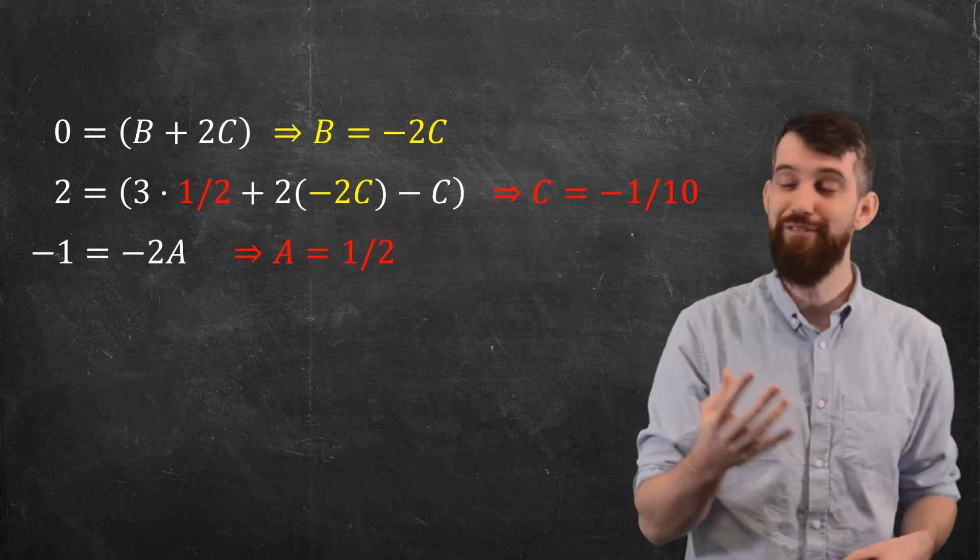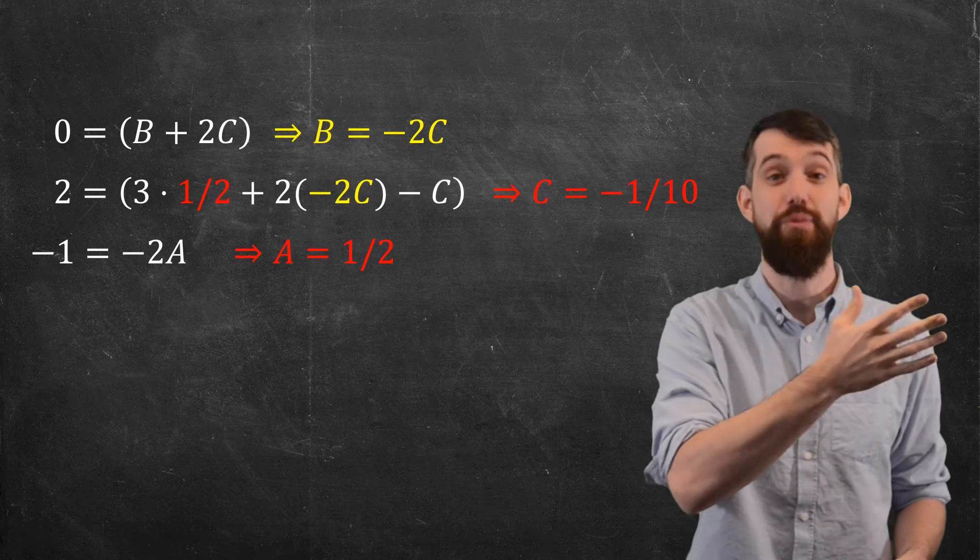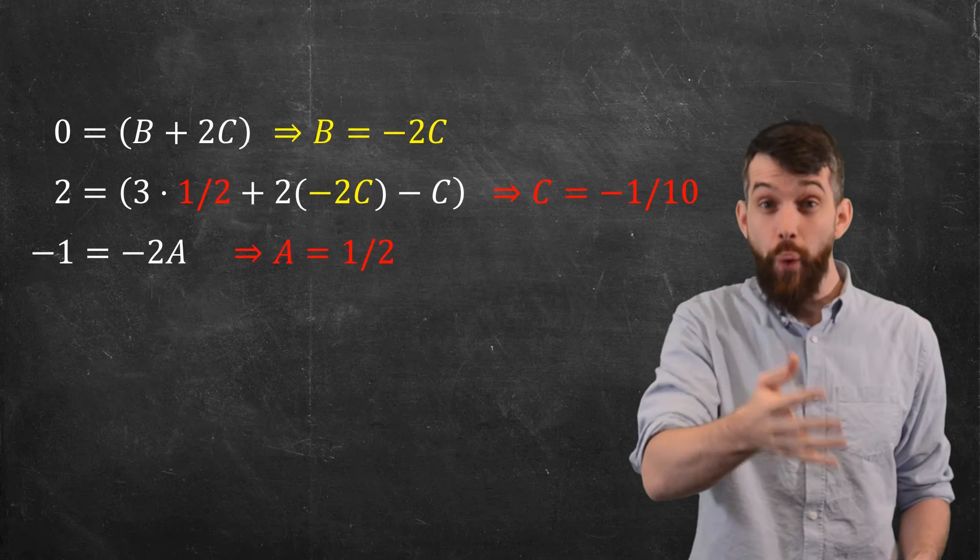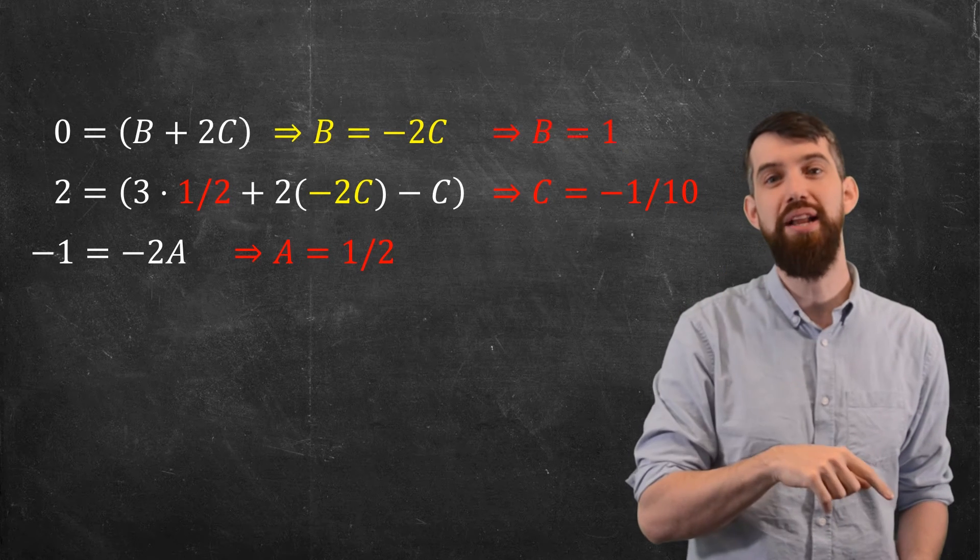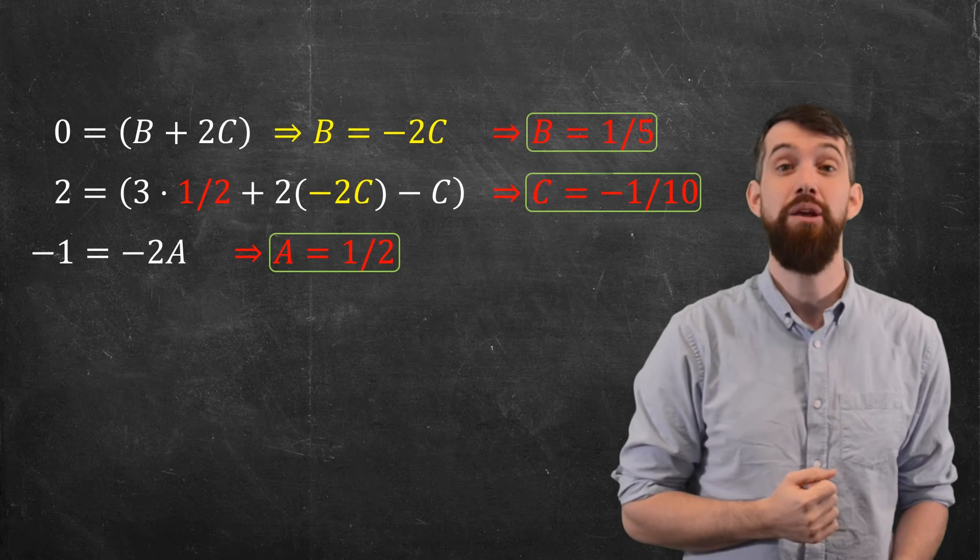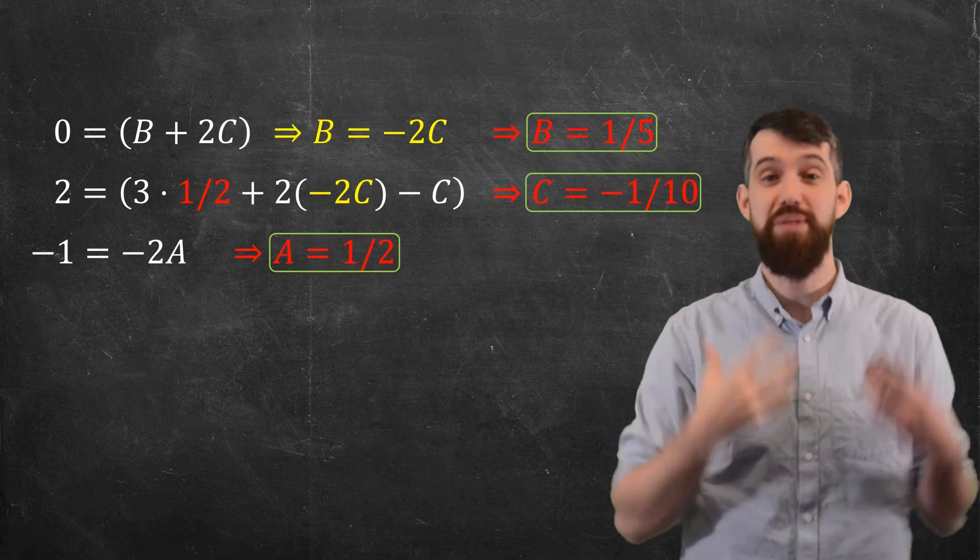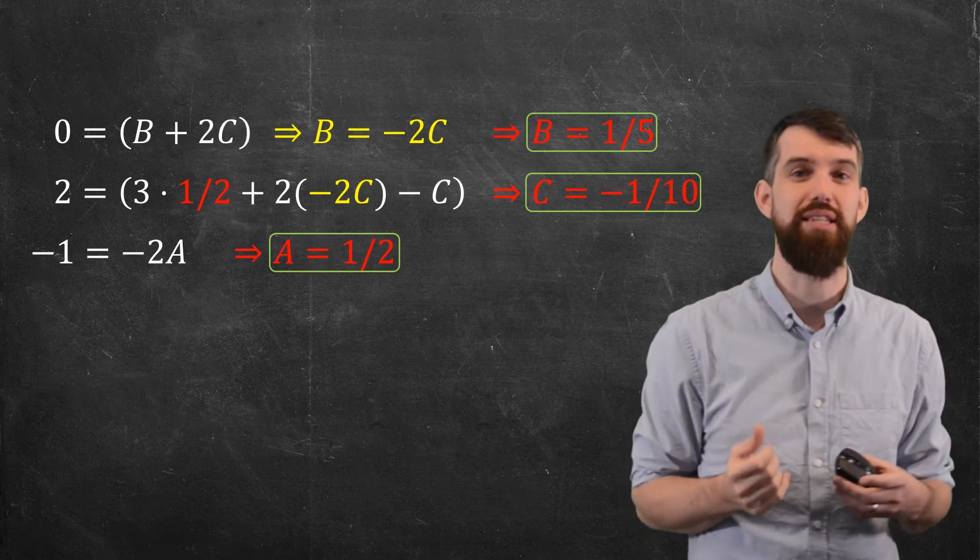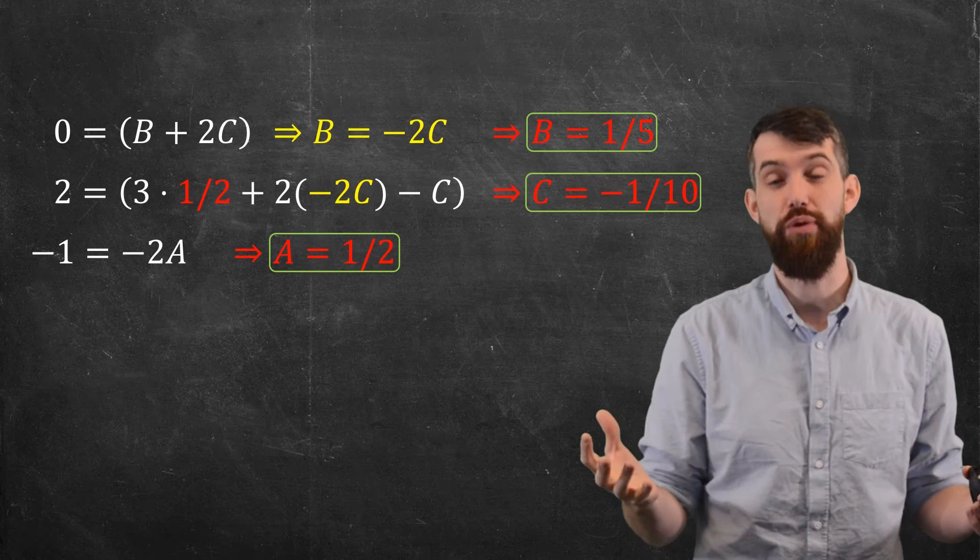So now I know my a, I know my c. If I look at the top equation again, remember I had that relationship b is minus twice c. So if c is minus 1 tenth, then my b is going to be equal to 1 fifth. And now I have my a, b, c's. So that was my particular sort of ad hoc way of solving this system of linear equations. It's just a bunch of algebra.